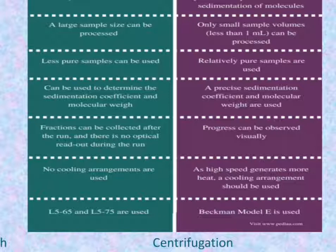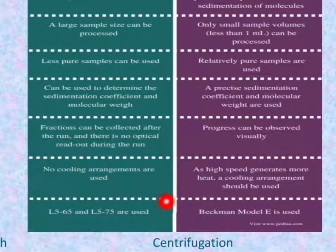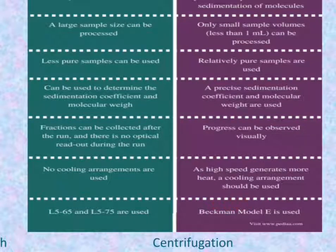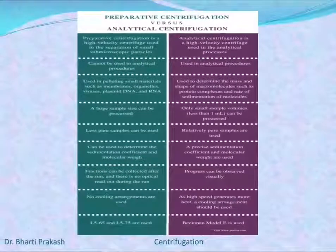The last difference between the two is the types of machines used. In preparative centrifugation, L5-65 and L5-75 are used. But in analytical centrifugation, the Beckman Model E is used. So these are the nine differences present between the preparative centrifugation and the analytical centrifugation.